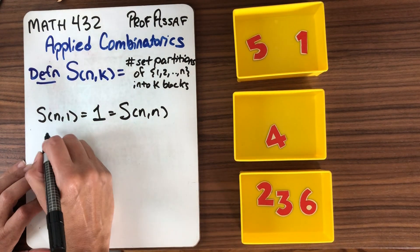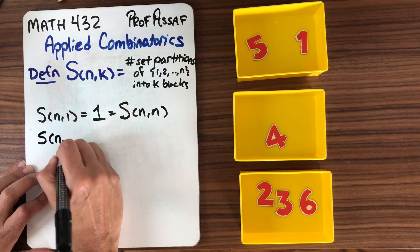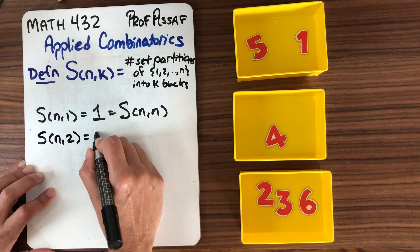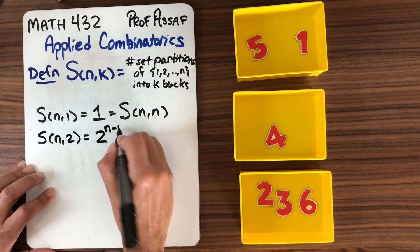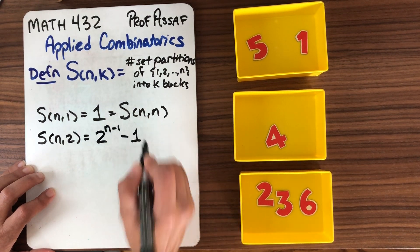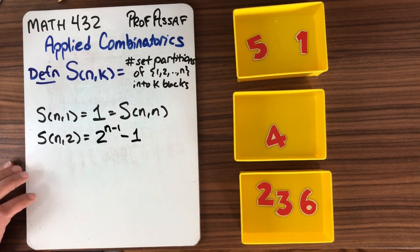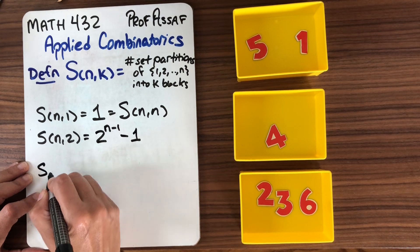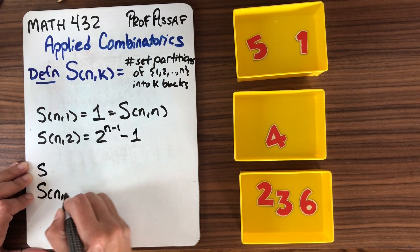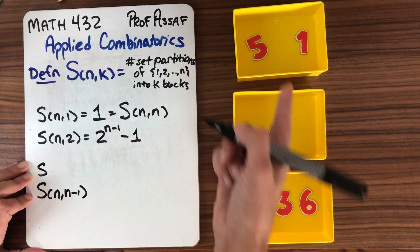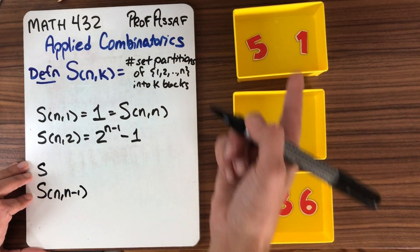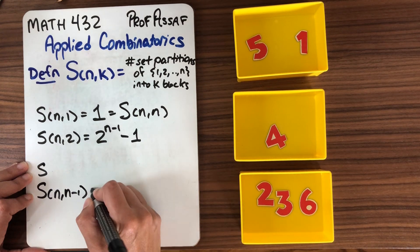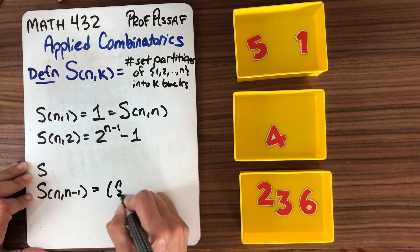Some other interesting formulas we've seen: S(N,2), if we have just two blocks, equals 2^(N-1) minus 1. And if we jump to the other end, S(N, N-1) — if I have N minus 1 blocks — then by the pigeonhole principle some block gets 2 elements, and counting it, only one block will get 2. So this is just N choose 2.